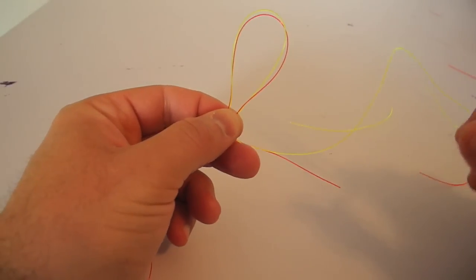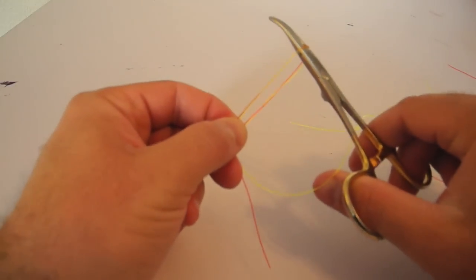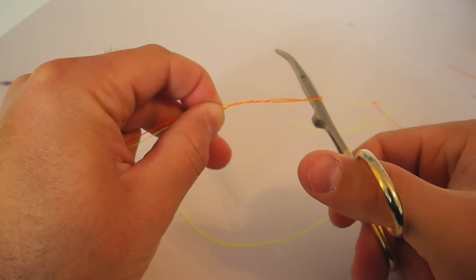Then what I'm going to do is take my favorite pair of hemostats here and I'm going to put it through that loop and I'm going to twist once, twice, kind of two and a half times.